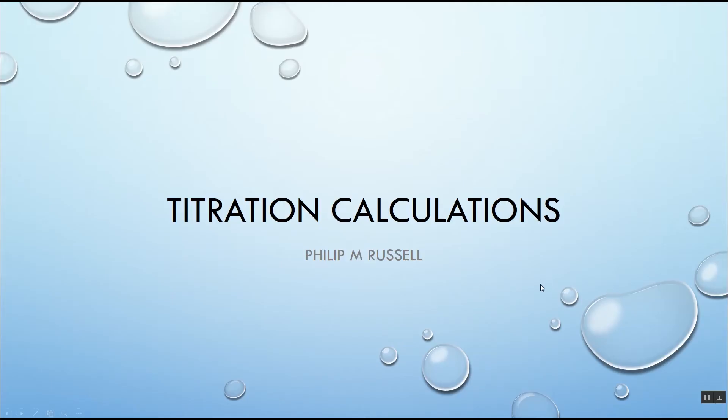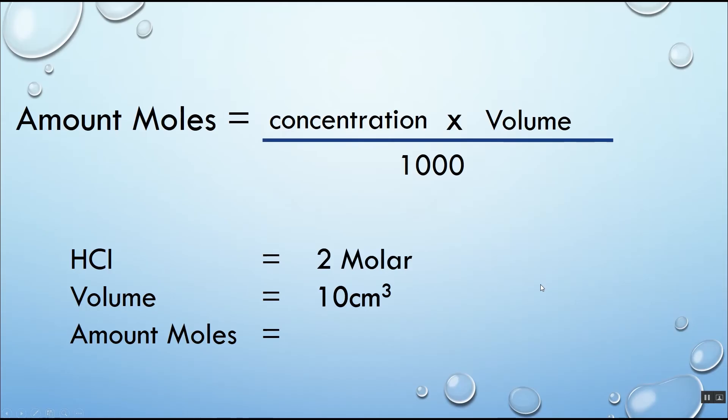Let's have a look at some titration calculations. The amount of moles equals the concentration times the volume divided by a thousand. Our HCl we had a two molar solution and we had 10 centimeter cubes of that. Let's put that into the equation. We'll replace the concentration with two molar and the volume with 10 centimeter cube and do the calculation.